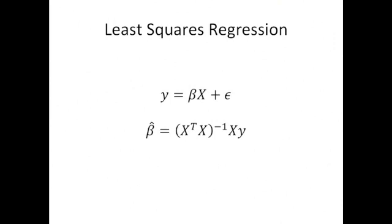Just to review, least squares linear regression is a modeling technique where if you have several variables, represented as x — a vector representing the different random variables that we're looking to fit a line to — we multiply x by some coefficients beta, a vector of coefficients, and we add in a standard error term at the end, and that will give us y, which is our dependent variable.